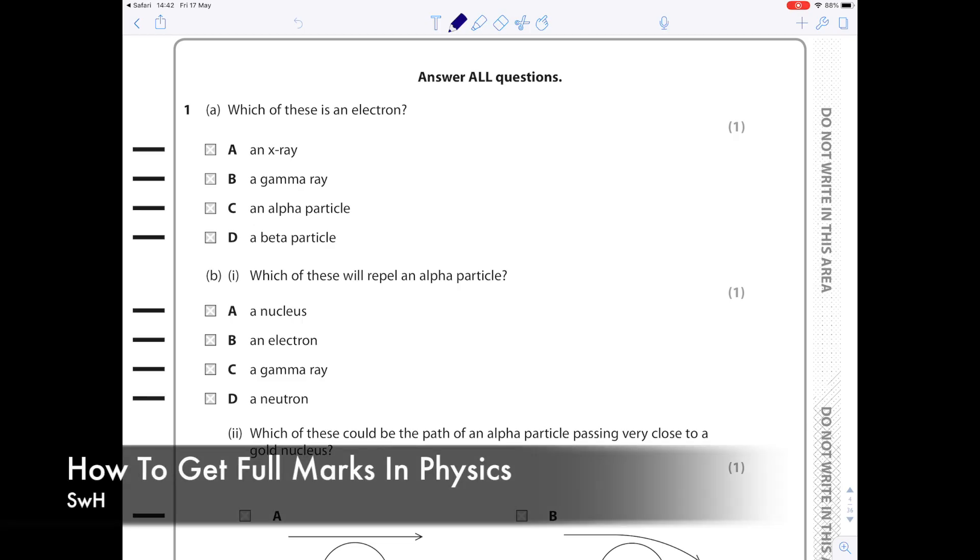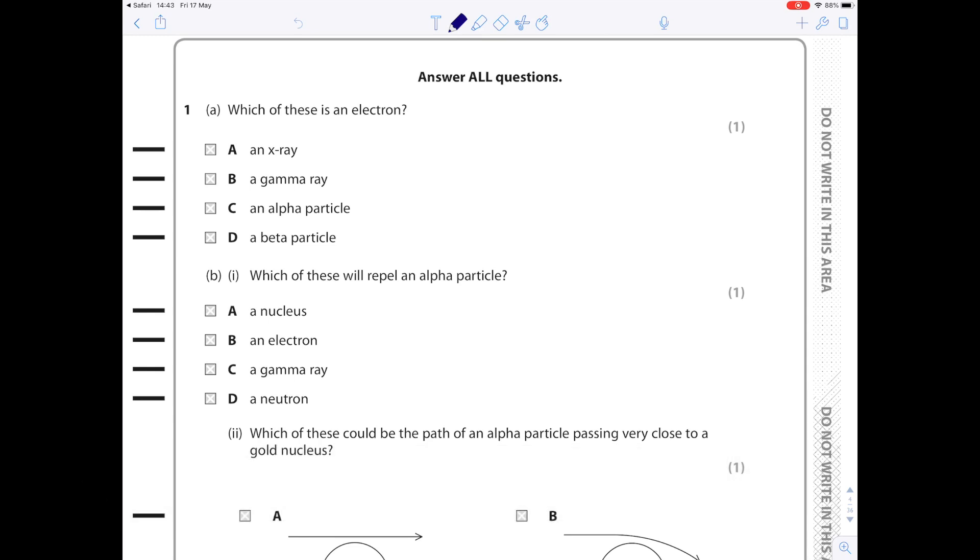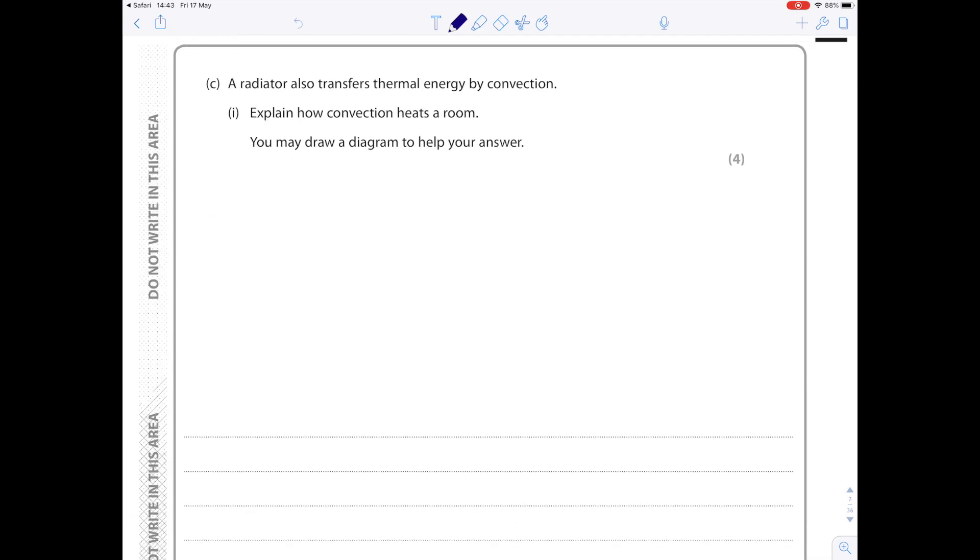Right, as my biology and chemistry videos seem quite popular, I'm now making a how to get full marks in your physics exam. Questions like this: a radiator also transfers thermal energy by convection, explain how convection heats a room. You may draw a diagram to help you answer. Anyone who's been following me for a while knows that I will avoid drawing diagrams at any cost, so luckily we're not forced to do this.